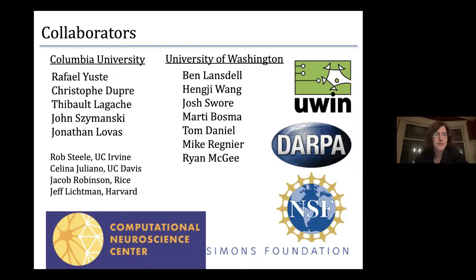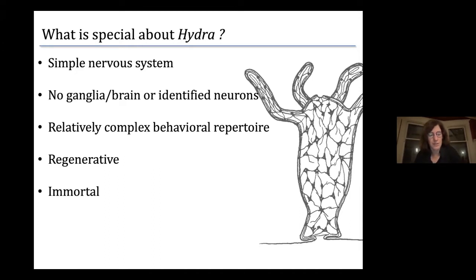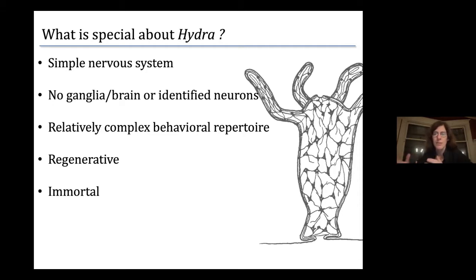So why Hydra? The most prevalent model systems in neuroscience, going from small to large, are C. elegans, Drosophila, mouse, monkey, and human. Where is the need for another invertebrate? Hydra is really different from the most comparable species, C. elegans.